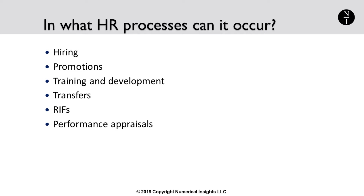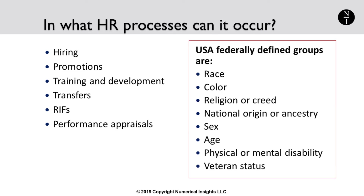When companies plan a large reduction in their workforce, such as the elimination of multiple departments at once, it's a best practice to conduct an impact analysis first to ensure that the group of employees being made redundant isn't made up of mostly one gender, one ethnicity, or one age group. A company would want to ensure they aren't disproportionately impacting any protected groups. Note that the protected groups shown are for the USA — you will need to research whether your country or region has defined specific groups for your area.